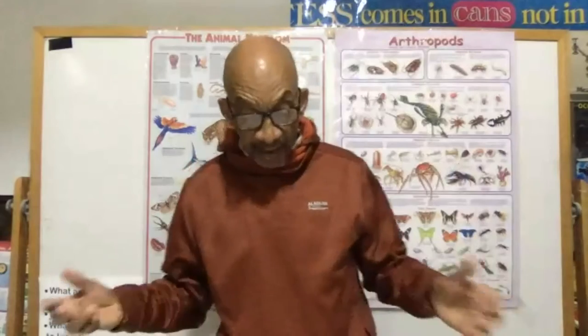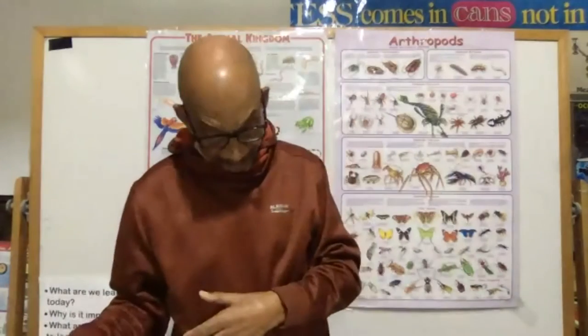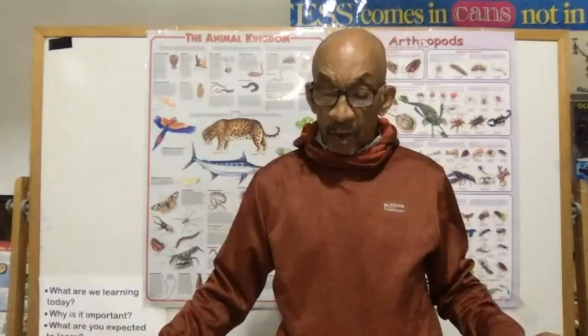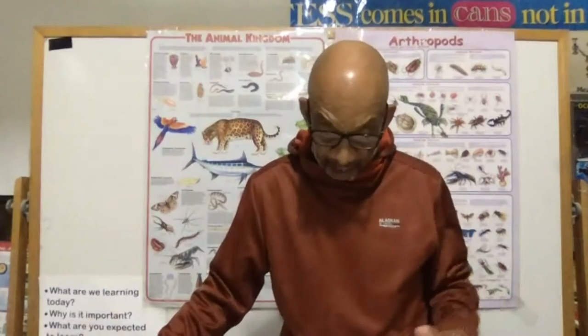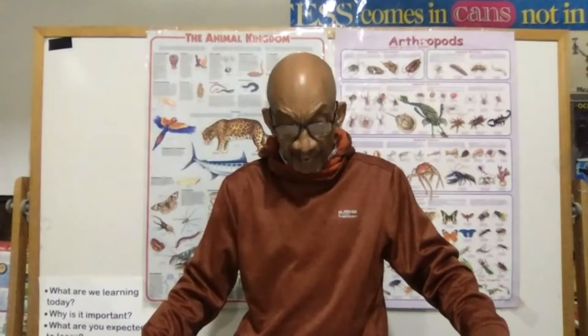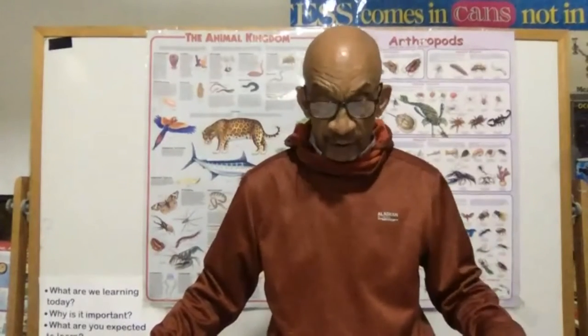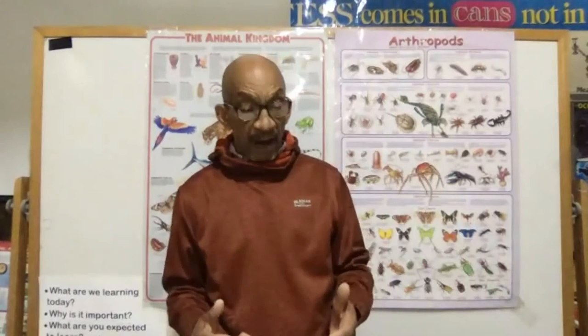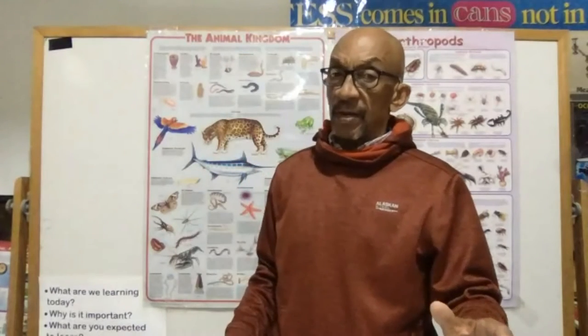The phylum of the bess beetle is Arthropoda. The class is Hexapoda or Insecta. The order is Coleoptera. The family is Passalidae, and its genus is Passalus. As for the species, there are over 500 different species of that little organism. Hopefully you now have a basic idea about taxonomy. You'll be hearing more about it as you go through the rest of your virtual field trip.